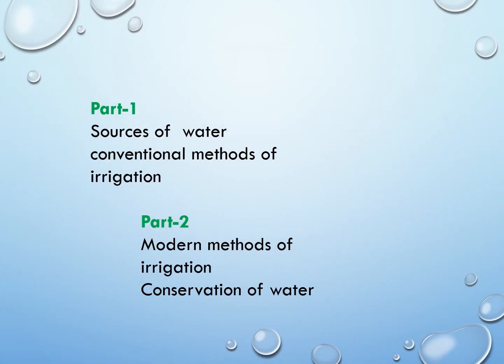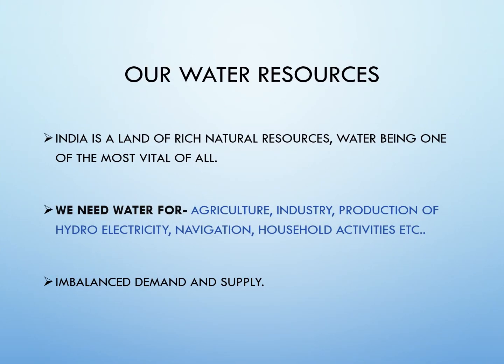The chapter is a little lengthy, so we have divided it into two parts. In Part 1, we will learn about sources of water and conventional methods of irrigation. In Part 2, we'll discuss modern methods of irrigation and conservation of water. Today's class is on Part 1 — Water Resources.